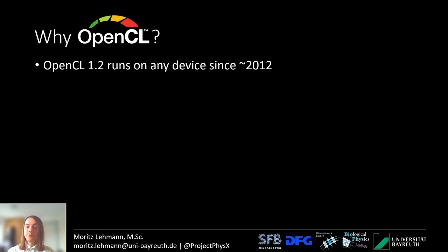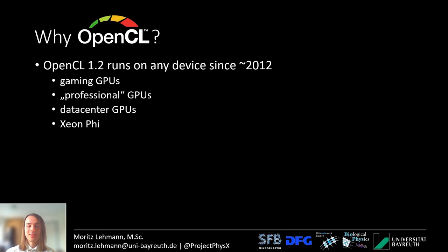Why do I use OpenCL? The main reason is that OpenCL 1.2 runs on any device since around 2012. It runs on gaming GPUs, professional GPUs, data center GPUs, and even the Xeon Phi from Intel. It also runs on CPUs if you need more memory.